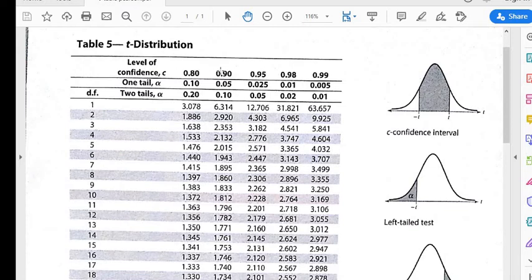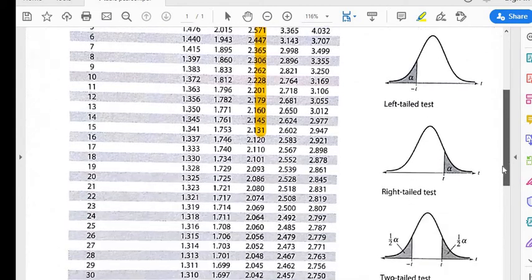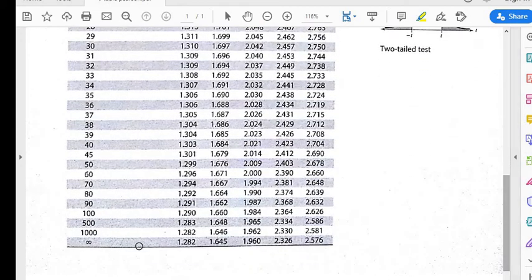Because we're looking for 95% confidence we would just come to our level of confidence which is 0.95 and then use that column. We're going to go down this column all the way to the bottom row. The infinity row down here is the normal table. So we just go all the way down that row until we get to 1.96.